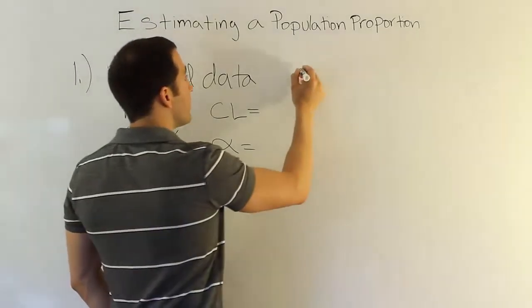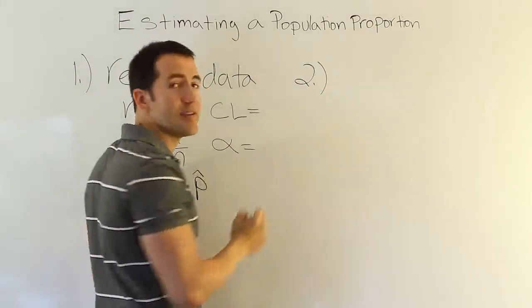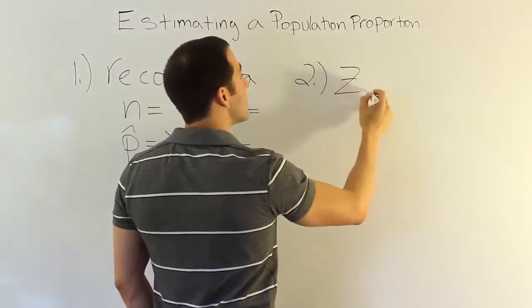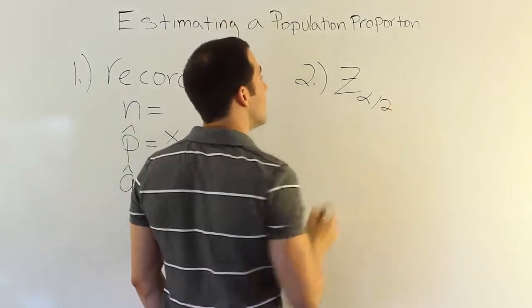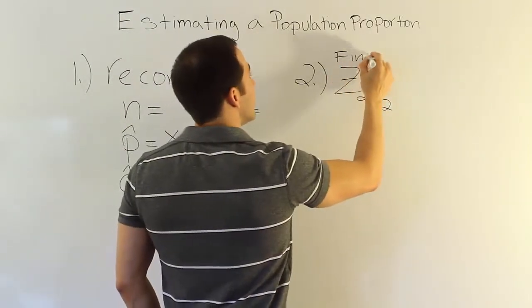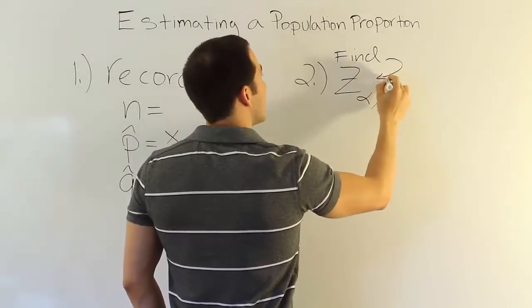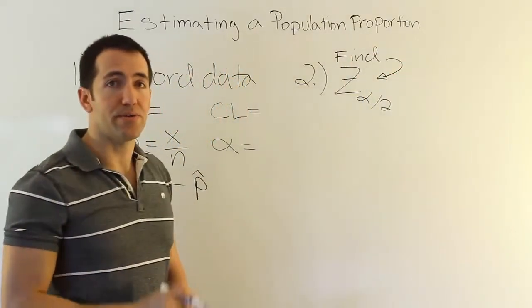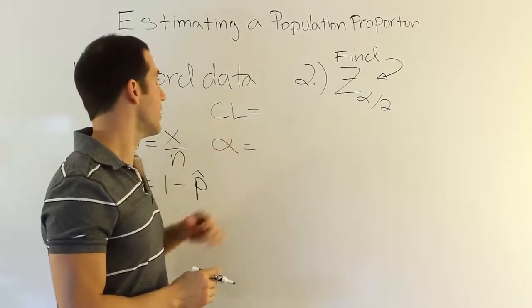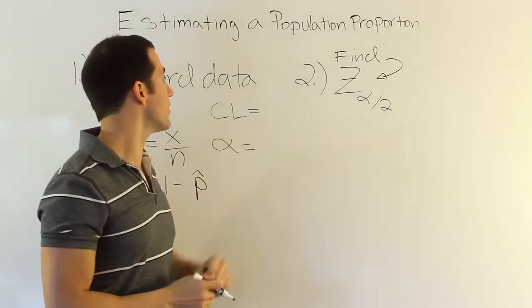Then our step two of the process is always going to be to get a table value, a critical value, a critical z value in this case. So it'll be z alpha divided by 2. That's our multiplier. We want to find that value. So our second step is to find z alpha divided by 2, determine what that is. Of course, that'll be based on whatever our confidence level is and our alpha, alpha divided by 2.